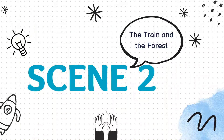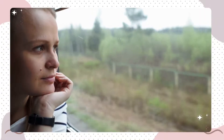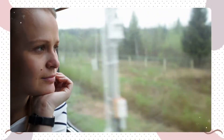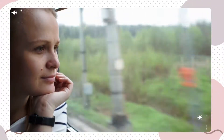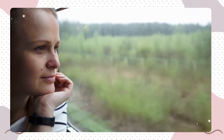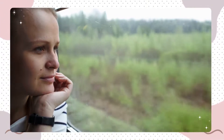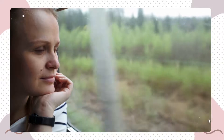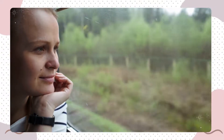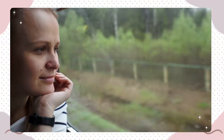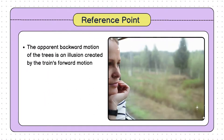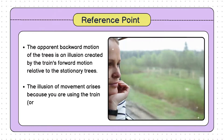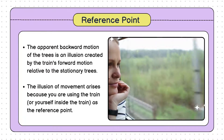Let's explore another relatable example. Imagine you're comfortably seated inside a train gliding through a dense forest. As you gaze out the window, you might notice the trees outside seem to be moving backward, slipping away in the opposite direction. But wait — are these trees traveling backward? Of course not. They're firmly rooted in the ground. Why then do they appear to be in motion? This illusion arises because you're in a moving train, using either yourself or the train as your reference point.